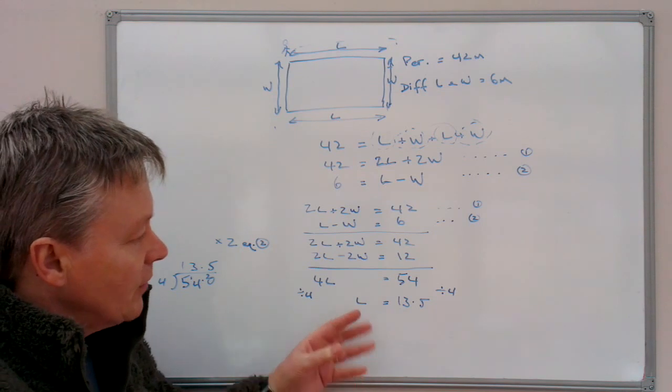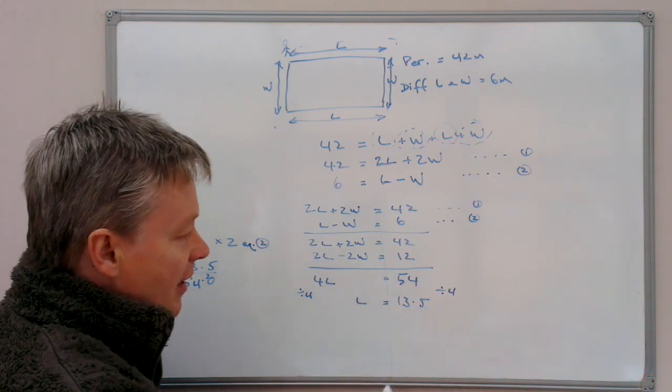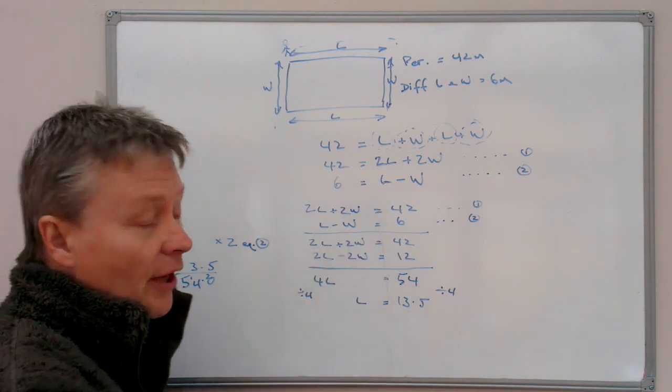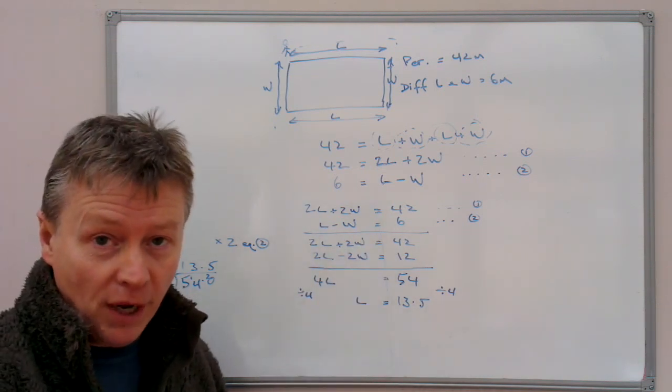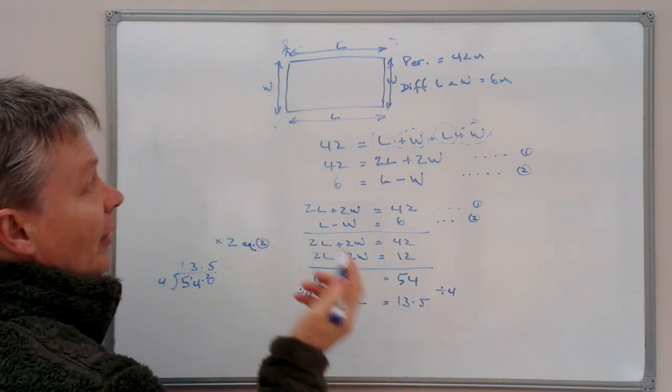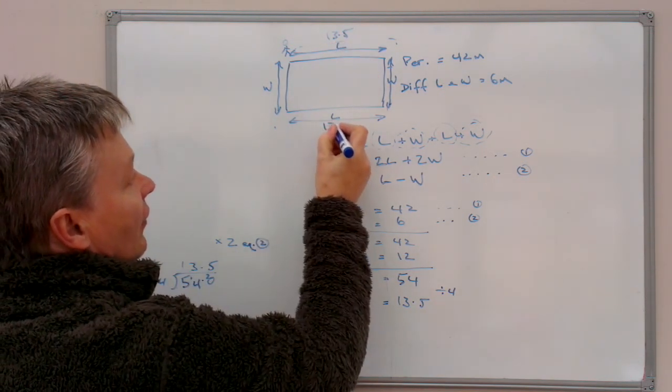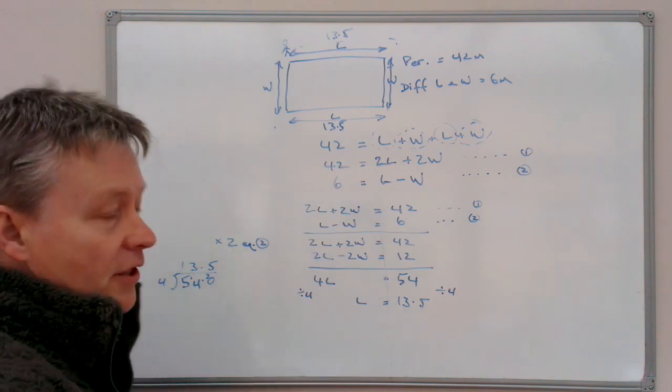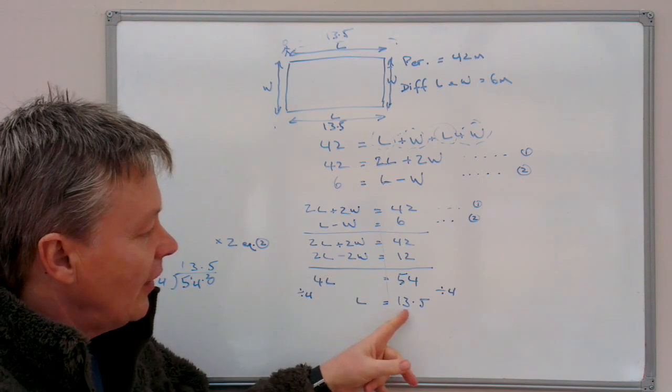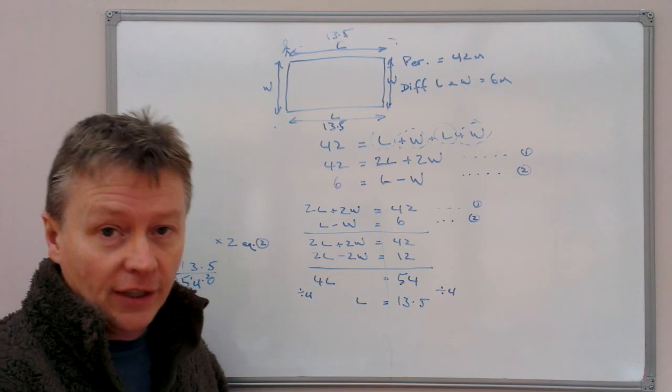Now, just a couple of things really with this is that you'll notice that as I've been working down, I've been working straight down the page. And like a lot of algebra, it's always good to work down the page and make sure that you keep everything in balance. We've got to a position now that we've worked out a value of L of 13.5. So in other words, this distance here is 13.5 and this distance here is also 13.5. What we can do is then take that value of L and put it into any one of the equations to work out the value of W.